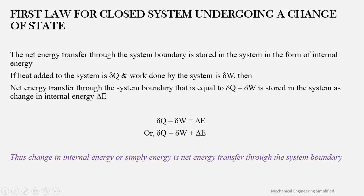Now, the first law for a closed system undergoing a change of state: the net energy transfer to the system boundary is stored in the system in the form of internal energy. If heat added to the system is δQ and work done by the system is δW, then the net energy transfer is δQ minus δW, which is stored as the change in internal energy δE.